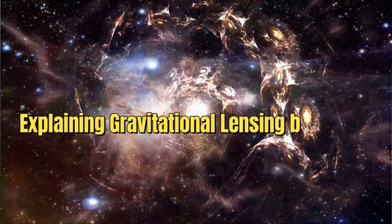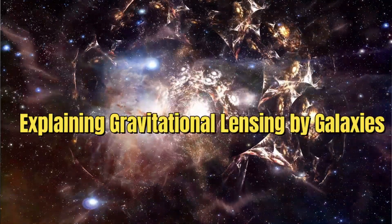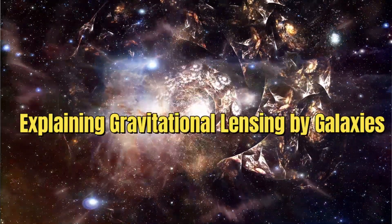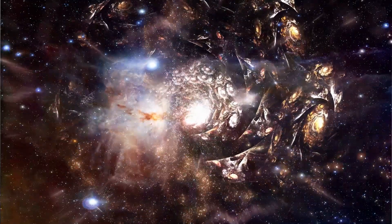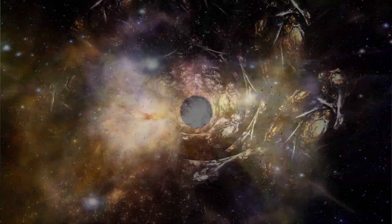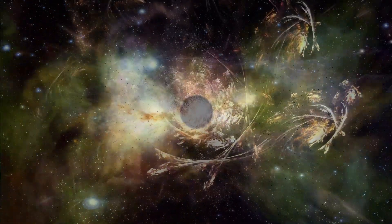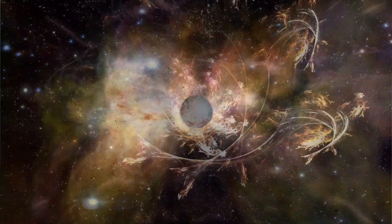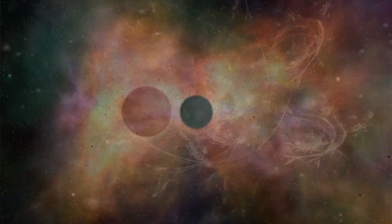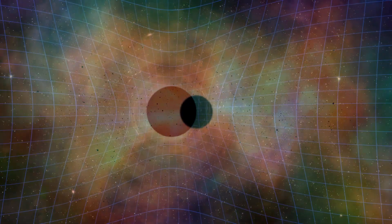One area where AQUAL struggles is in explaining gravitational lensing by galaxies. Gravitational lensing occurs when the gravitational pull of a massive object, such as a galaxy, bends the path of light from distant objects behind it. This phenomenon has been observed and provides strong evidence in support of the existence of dark matter.